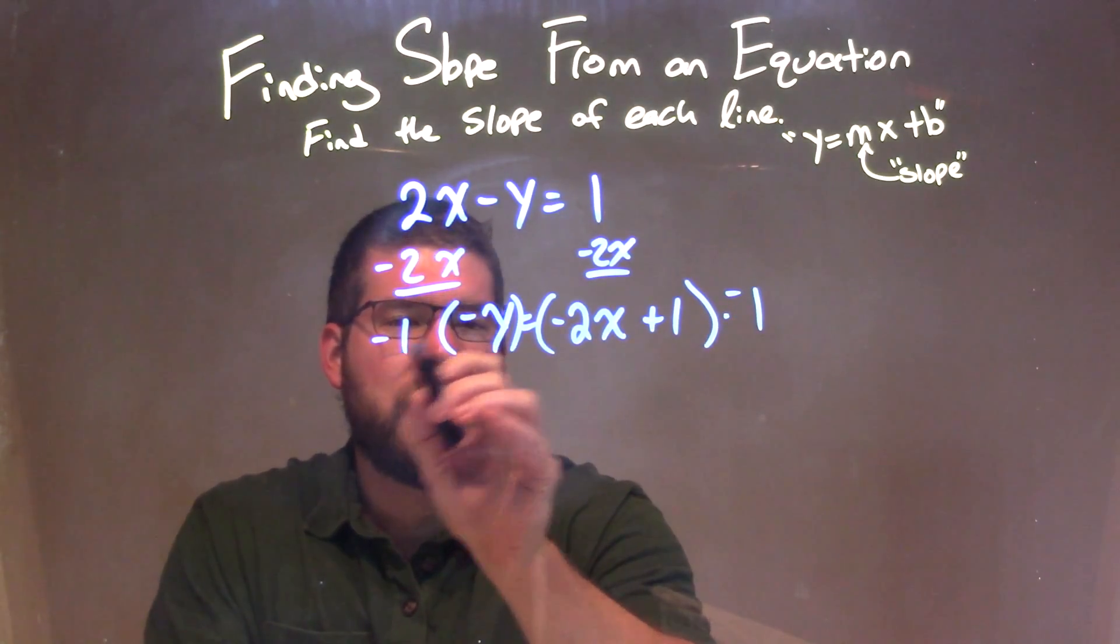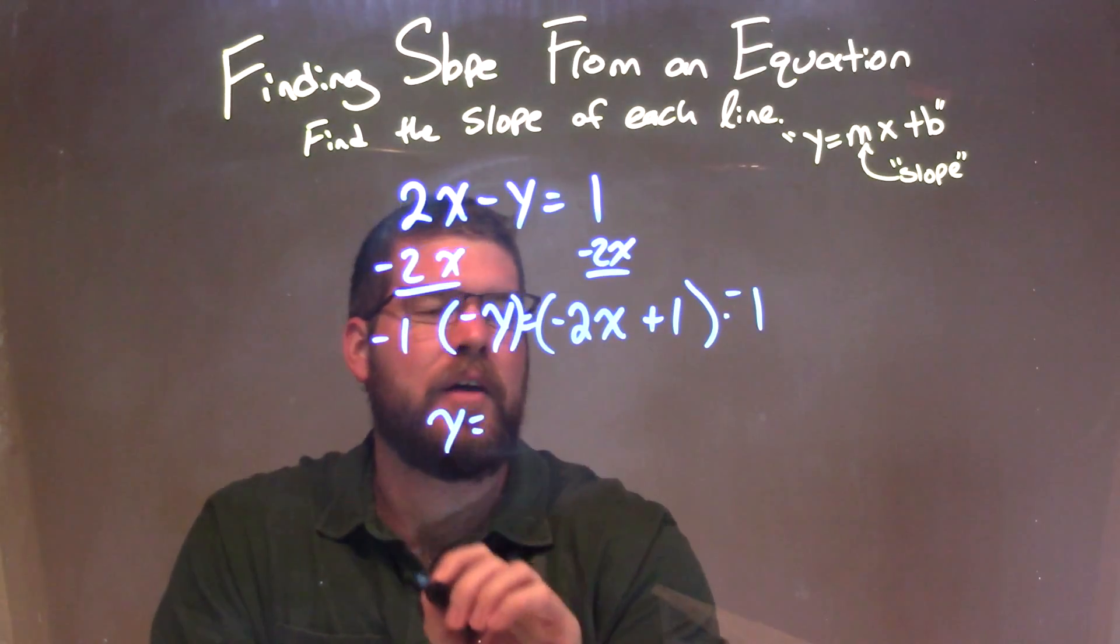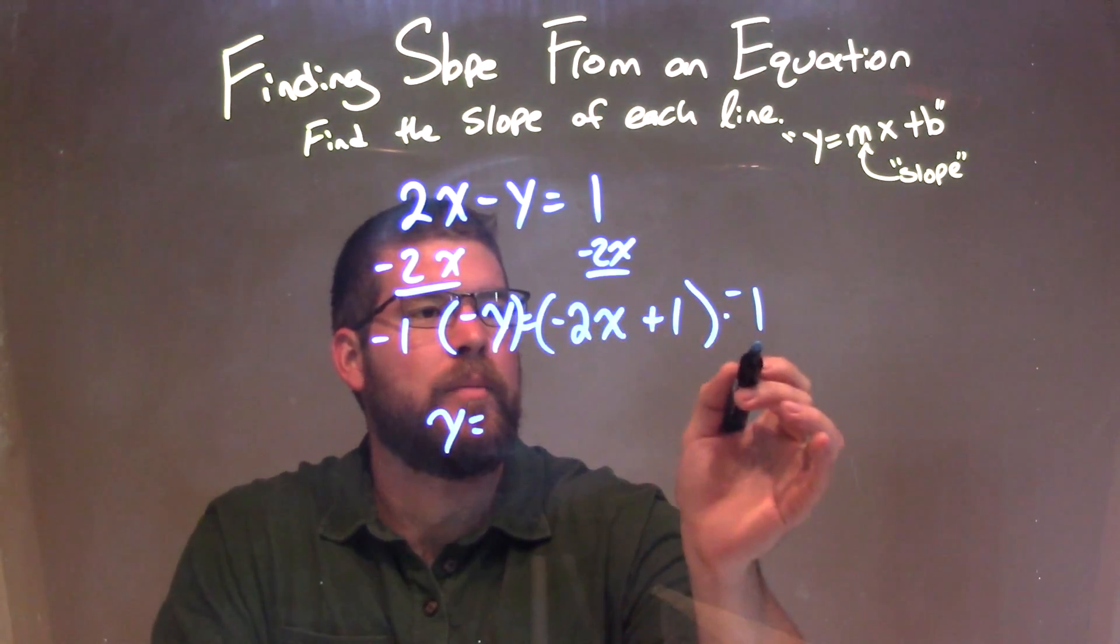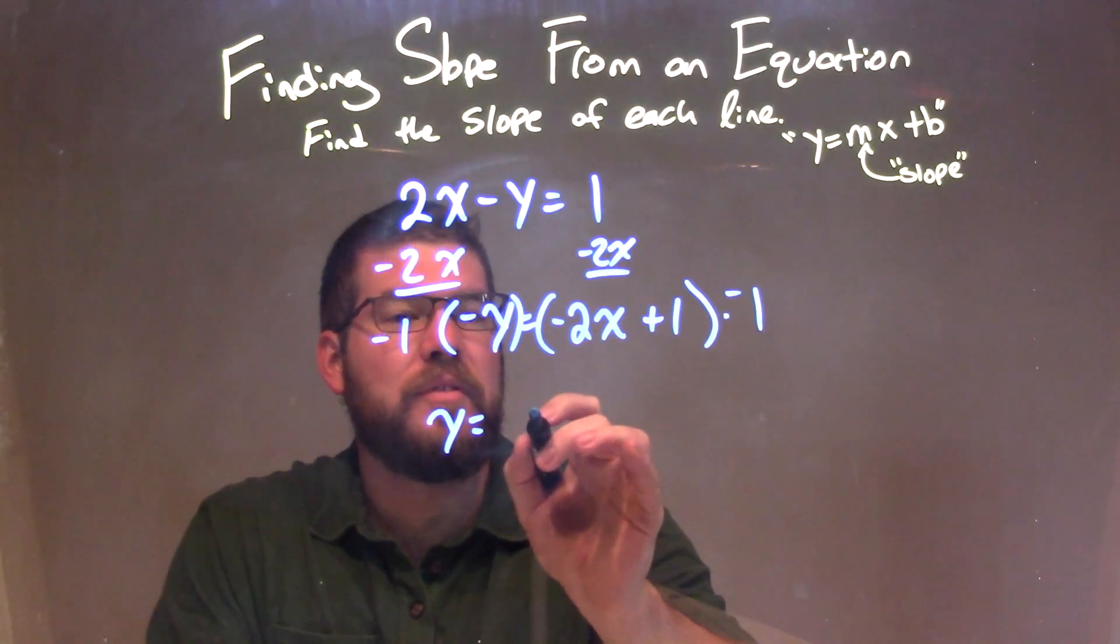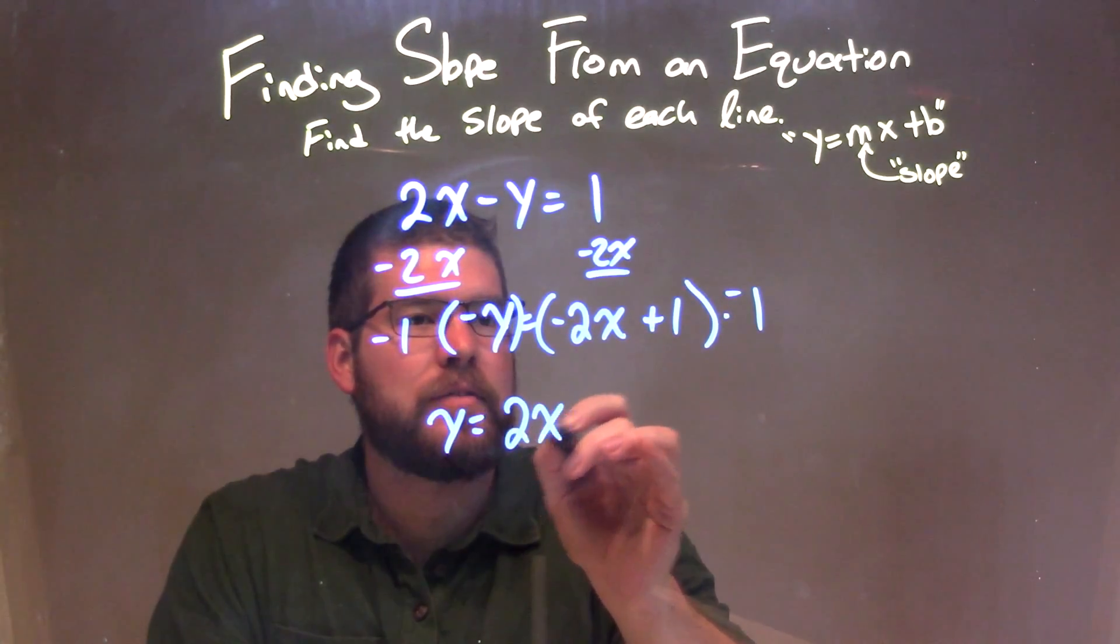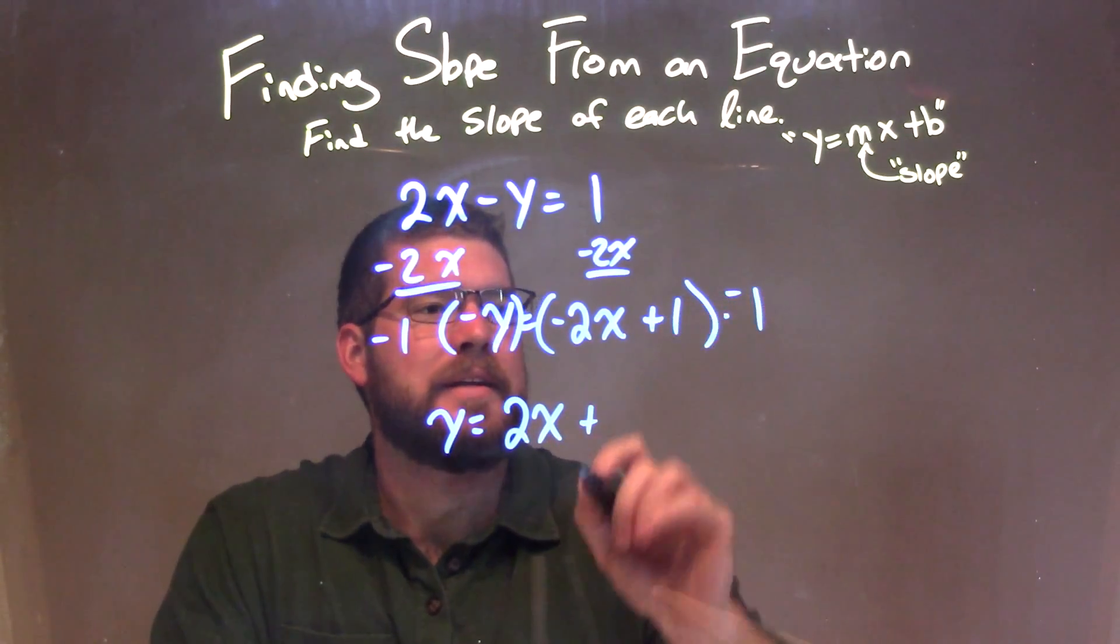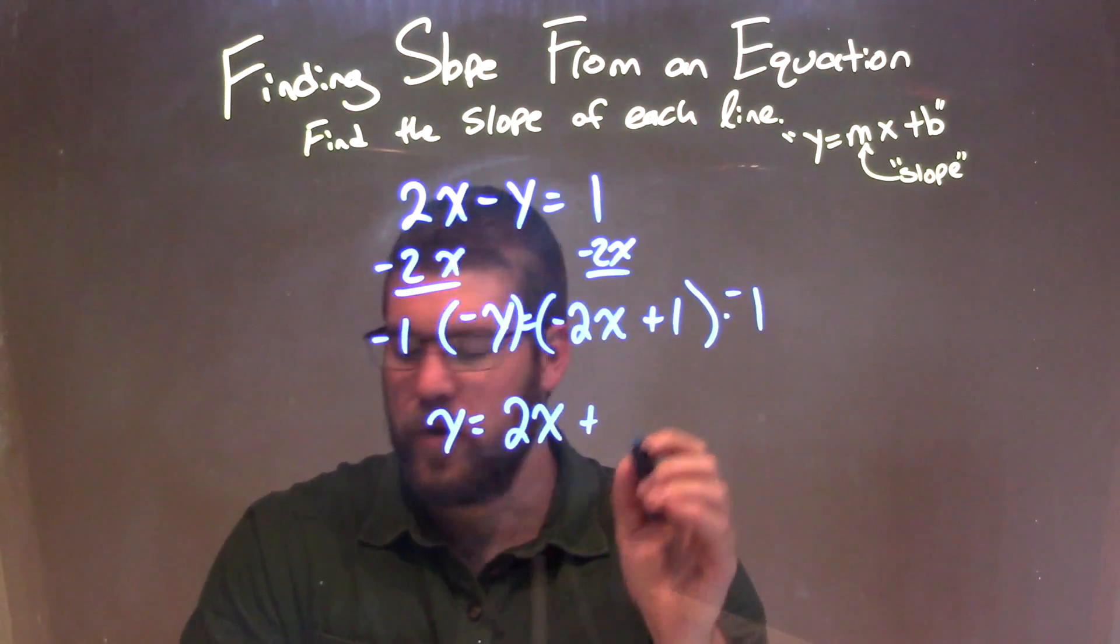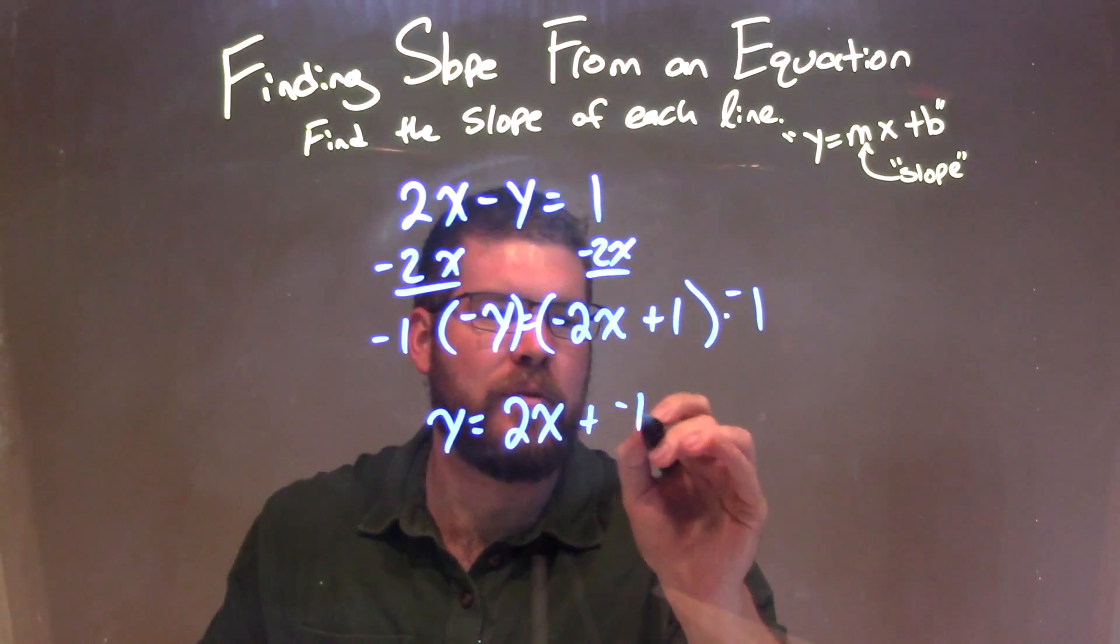By multiplying the left-hand side by negative 1, I get y by itself. On the right-hand side, I distribute negative 1 to both parts. Negative 1 times negative 2x is positive 2x, and negative 1 times 1 is negative 1, so we have 2x minus 1.